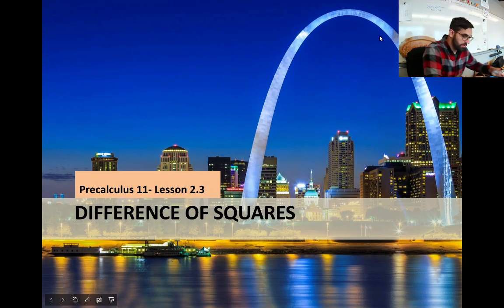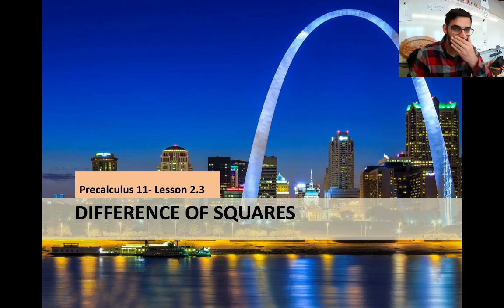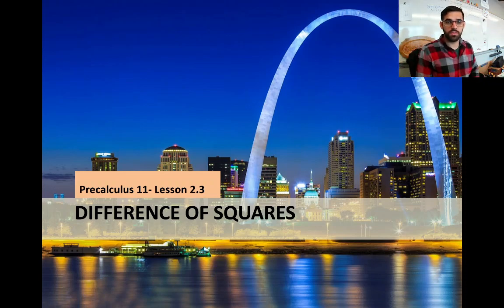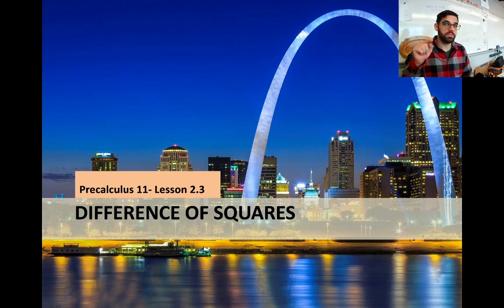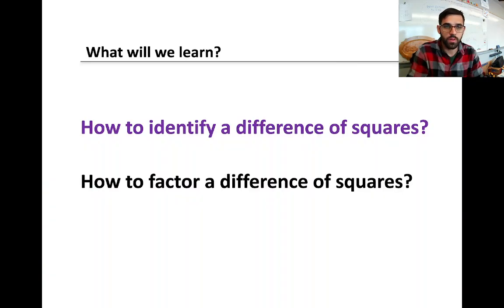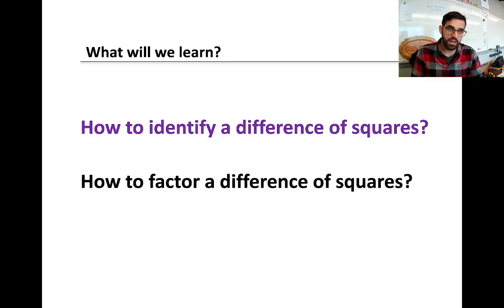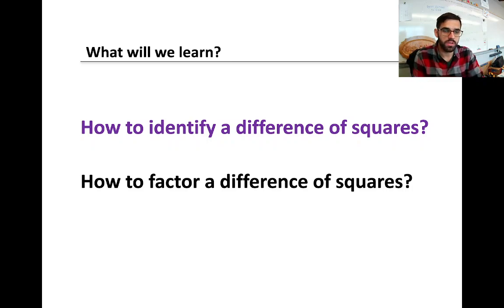This is lesson 2.3 of our Pre-Calc 11 class. Unit 2 is called polynomials, and lesson 3 is called difference of squares. What we're going to learn in this lesson is how to identify when a polynomial is a difference of squares, and then how to factor a difference of squares.